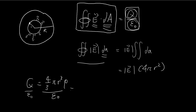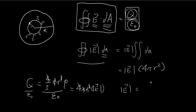By Gauss's law, we know that 4π r squared times the magnitude of the electric field equals the charge enclosed divided by epsilon. We can do some simplification: the pi cancels, the r squared cancels, and so the magnitude of the electric field is equal to r times rho divided by 3 epsilon. Don't forget the 3 in the denominator — so E = rρ / (3ε). This is the magnitude of the electric field.